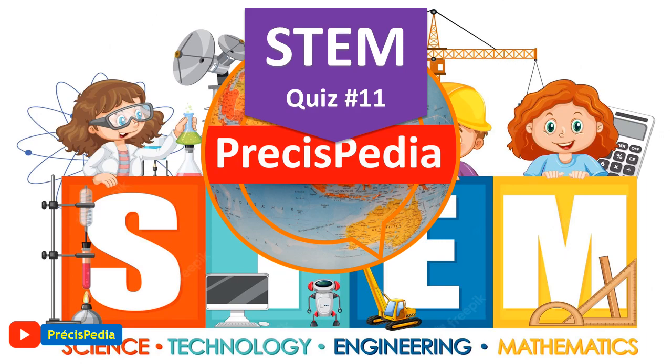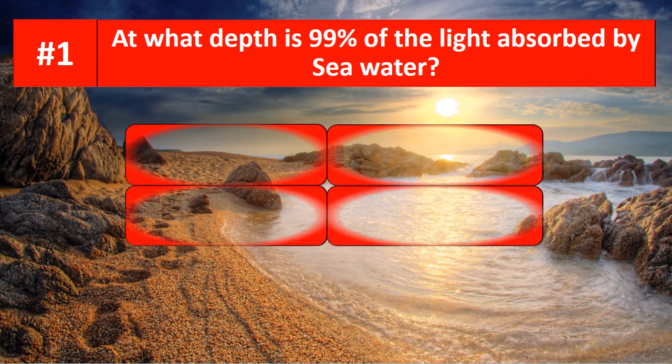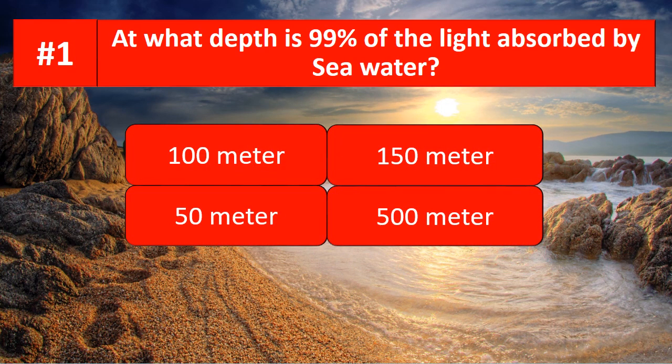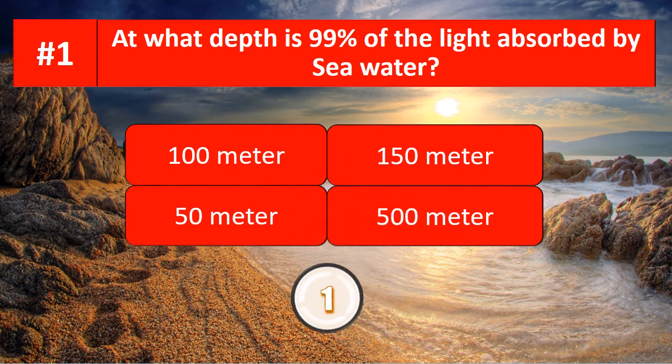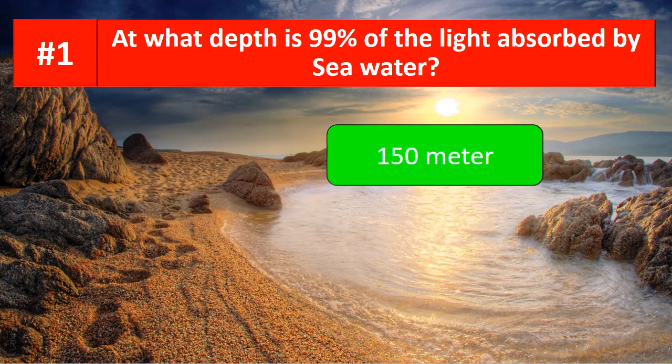At what depth is 99% of the light absorbed by seawater? The options are 100 meters, 150 meters, 50 meters, or 500 meters. The correct answer is 150 meters.